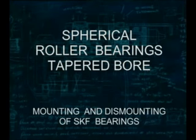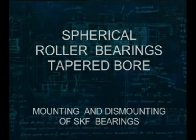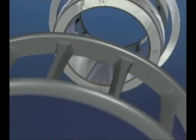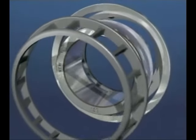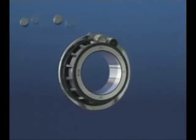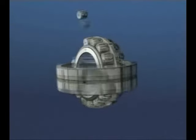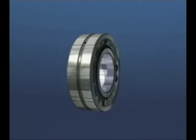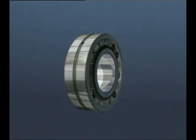This SKF training film is about spherical roller bearings with tapered bore. The spherical roller bearing with tapered bore consists of an inner ring with two raceways and two rows of spherical rollers in cages, a guide ring and an outer ring with a sphered raceway. This bearing is used where both static and dynamic misalignment capability is required and ease of mounting and dismounting is important.